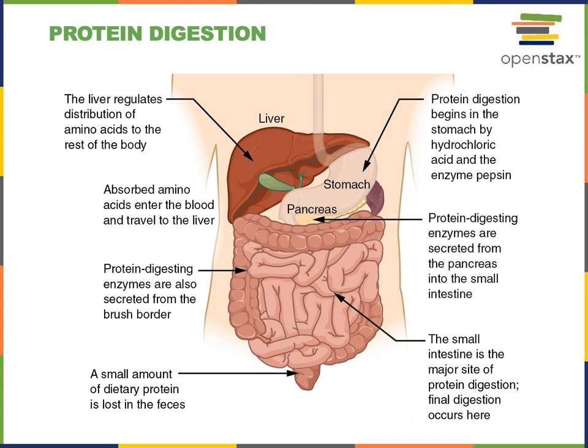Within the duodenum, the pancreatic proteases trypsin, chymotrypsin, elastase, and carboxypeptidase all catalyze hydrolysis of polypeptides, producing shorter and shorter peptides and eventually amino acids. The brush border enzymes in the small intestine finish chemical digestion, as dipeptidase breaks down the shortest peptides producing amino acids, which are then absorbed across the enterocytes lining the mucous membrane of the small intestine and move into the bloodstream.